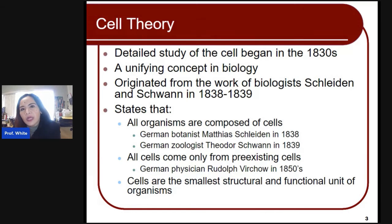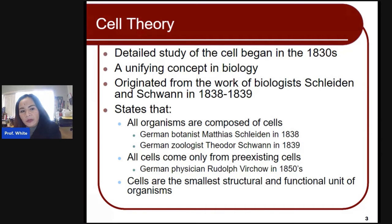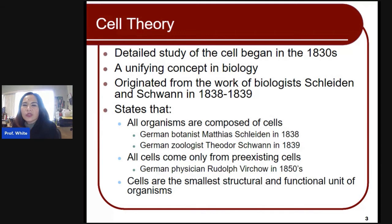Another principle of cell theory is that all cells come from pre-existing cells, and this came from the research of Rudolf Virchow during the 1850s. The third cell theory statement says that cells are the smallest structural and functional unit of the organism. Anton van Leeuwenhoek was able to see that cells have compartments and that cells are the smallest structural and functional unit of the organism.